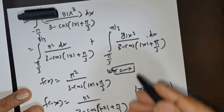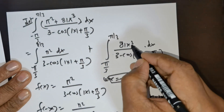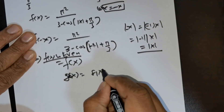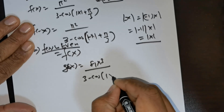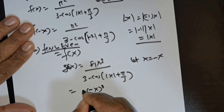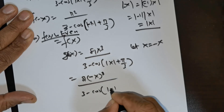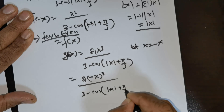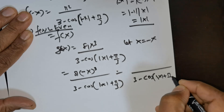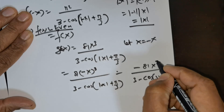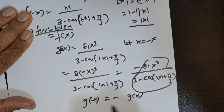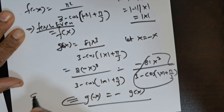That is the all-important conclusion. Now going back, if I take g(x) = 81x³/(3 - cos(|x| + π/3)) and substitute x = -x, I get (-x)³ = -x³ in the numerator, giving -81x³. By the previous argument, the denominator becomes 3 - cos(|x| + π/3), which is just g(x). But on the left-hand side we have g(-x), so g(-x) = -g(x), which directly means g(x) is odd.